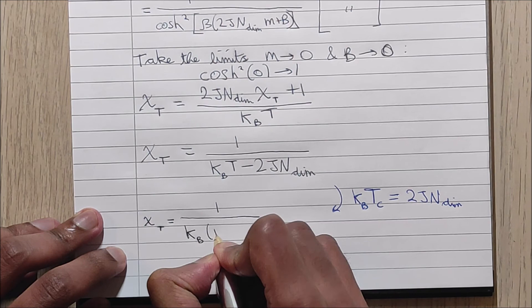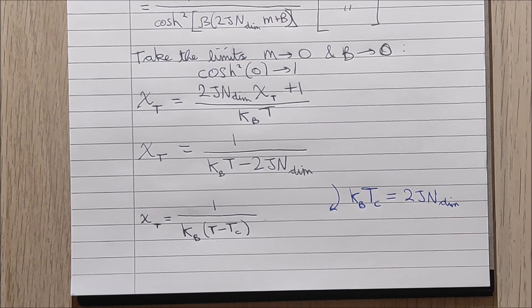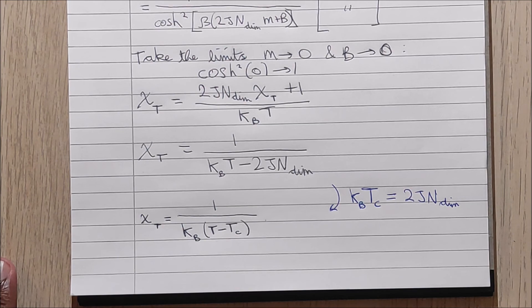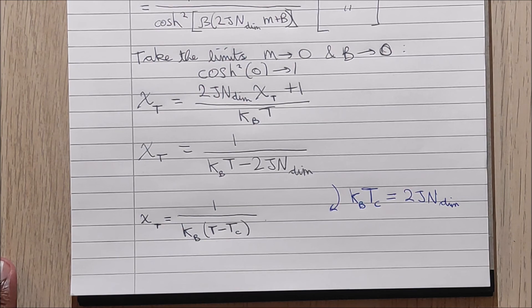And after a simple factorization we gain this, and this is the alternative form of the Curie-Weiss law with the critical temperature instead of the Curie-Weiss temperature.